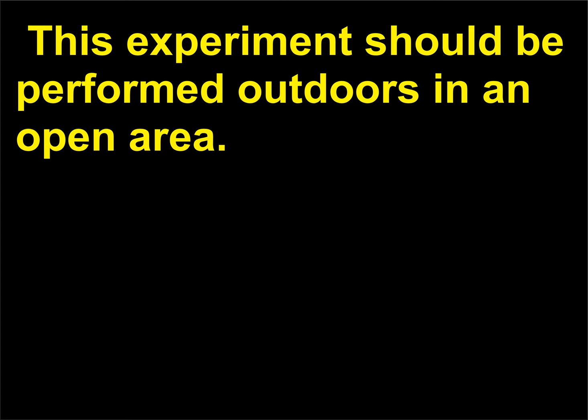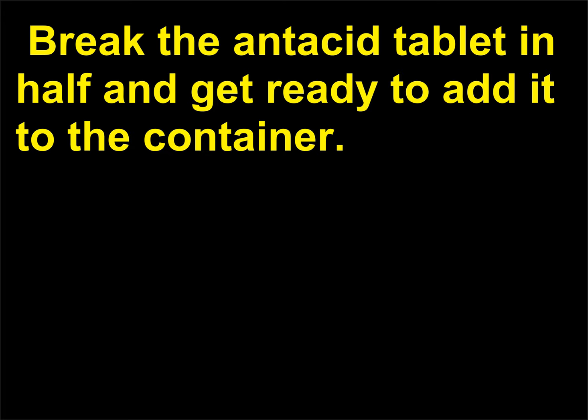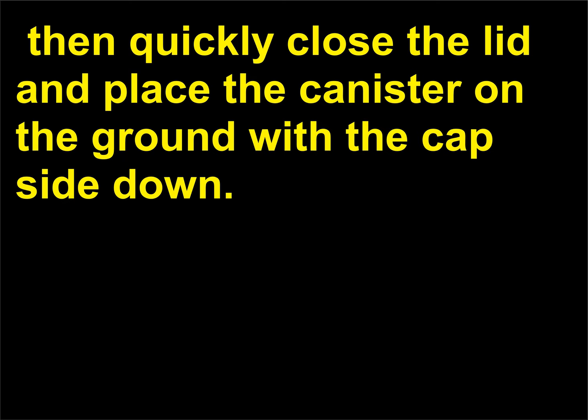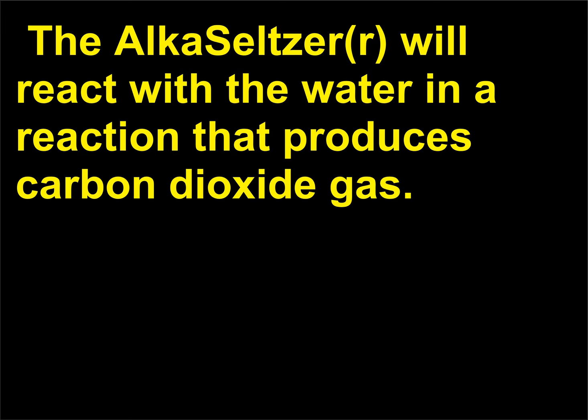The procedure: this experiment should be performed outdoors in an open area. Add about 1 teaspoon of water to the film canister and leave the lid open. Break the antacid tablet in half and get ready to add it to the container. This step requires you to be quick. Drop the broken antacid tablet into the container, then quickly close the lid and place the canister on the ground with the cap-side down. Stand back a good distance and wait for the rocket to launch.